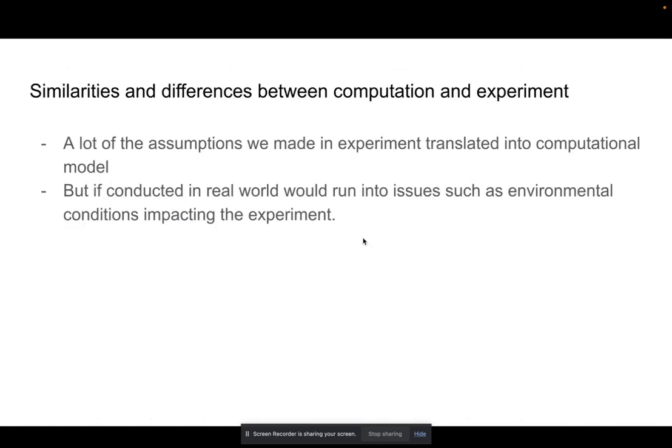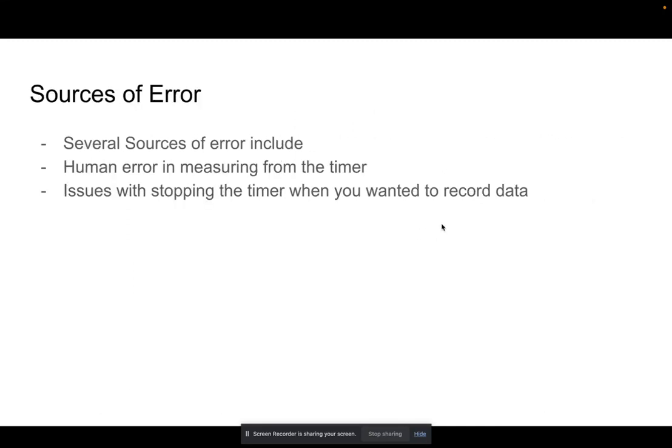Now, there are some similarities between a computational model and an experimental model. A lot of the assumptions that we made in the experimental model, like if we were to actually do this experiment, transition to this computational model. But if we were to conduct this experiment in real life, we would run into issues such as environmental conditions impacting the experiment.